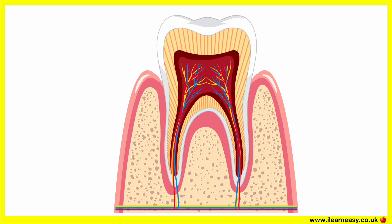Teeth have different parts. The different parts of a tooth have different functions. Each part of the tooth plays an essential role in maintaining its strength, function, and overall health. In this video, we will learn about the different parts of a tooth.